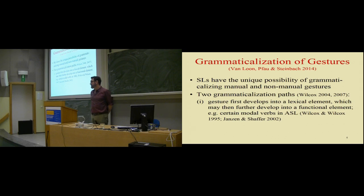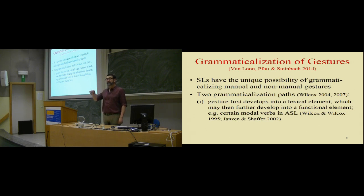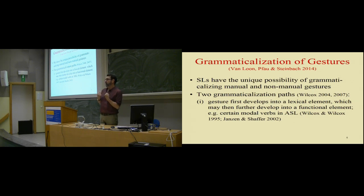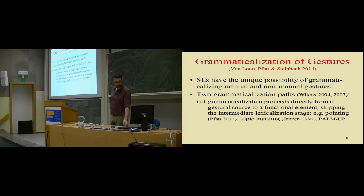People have argued that there are two ways for gestures to become part of the grammar of a sign language. In the first path — the grammaticalization path — a gesture used in the community first becomes a lexical sign, and then in a second step becomes a grammatical element. This has been argued for the ASL sign 'can,' which people have argued comes from a gesture for 'strong.' When it grammaticalizes into the modal verb 'can/be able to,' it undergoes phonological change and becomes one-handed.